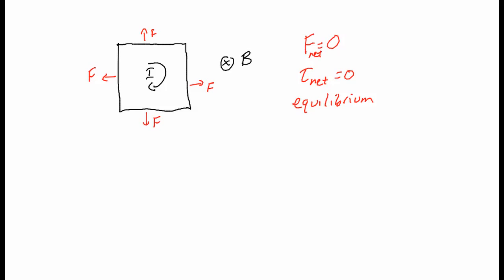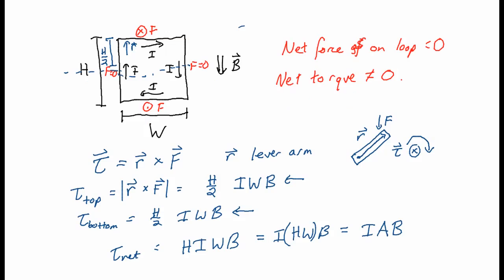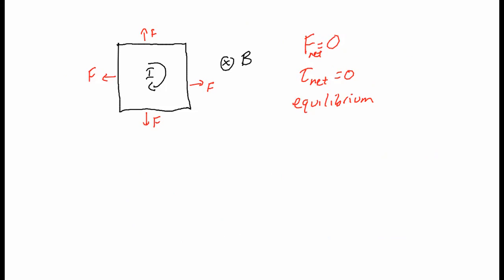So if the magnetic field points through a loop, it's in equilibrium and it doesn't spin. But if the magnetic field points along the loop, as in the previous case, then it will spin. That's interesting.